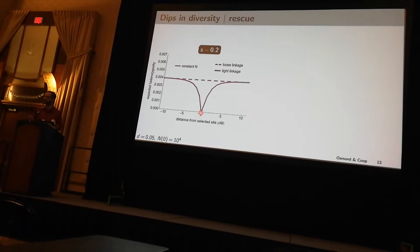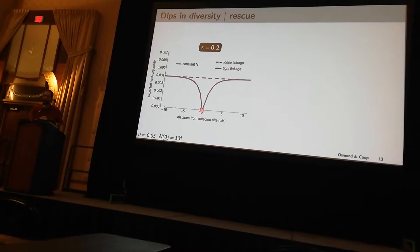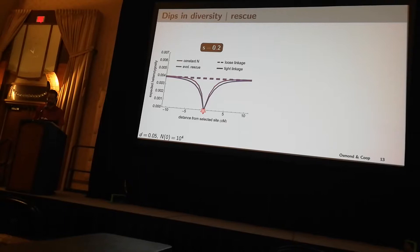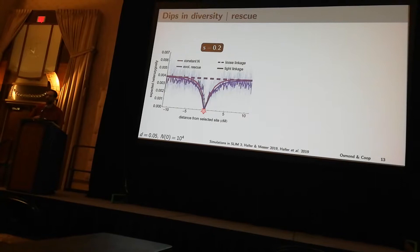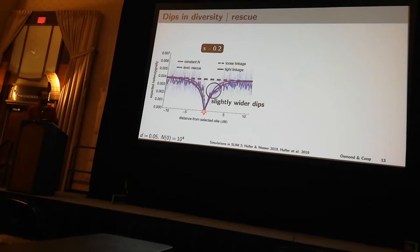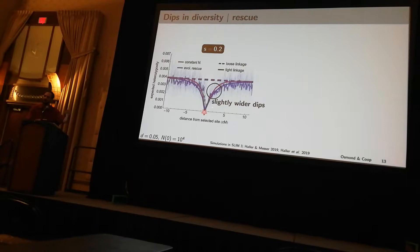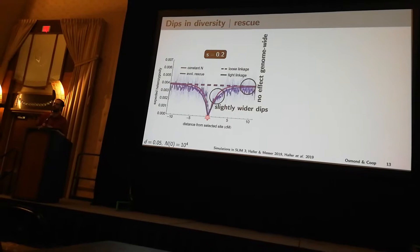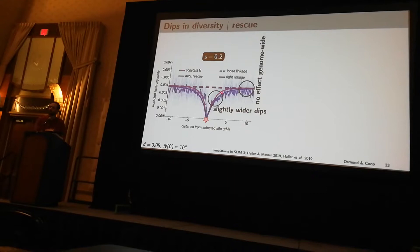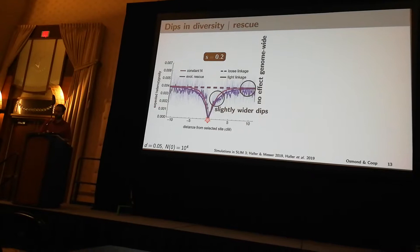We can use these k equals 2 results to directly predict these dips in diversity across the genome around the selected site. Here I'm showing the prediction in the case of constant population size, where we have this dip and a background level of genetic diversity shown with the dashed line. We can layer on our predictions under rescue and again compare to simulations, and we see that we're doing a decent job capturing these dynamics. There's little difference between the models under this strong selection coefficient — it's primarily a slightly wider dip in rescue due to this excess of coalescence, but really no effect genome-wide because these bottlenecks are occurring on a timescale quite short relative to coalescence. So we would say we don't detect any demography here, and we might overestimate S due to these slightly wider dips.